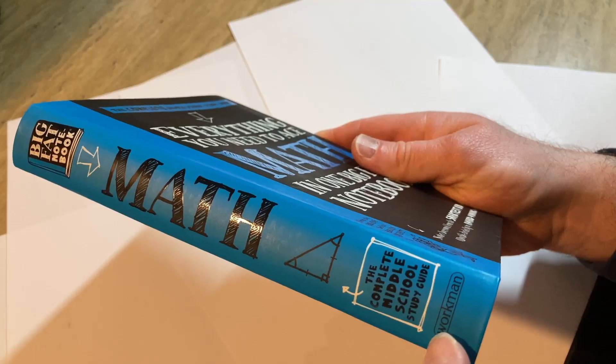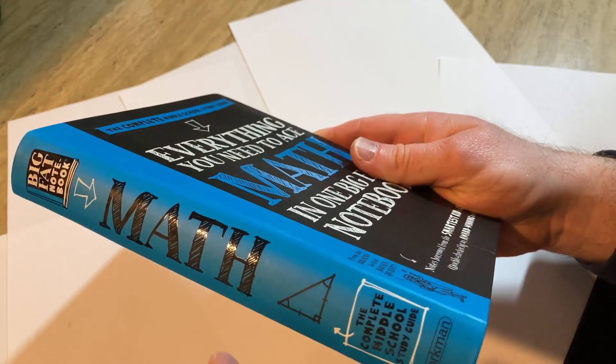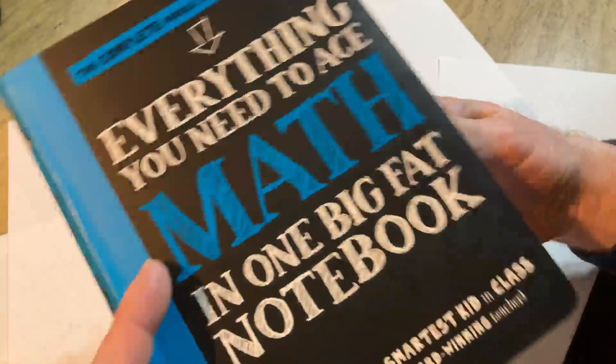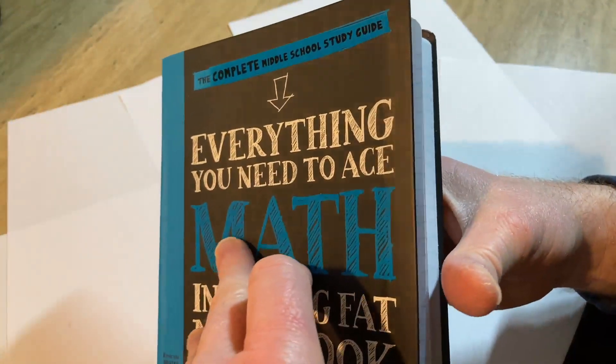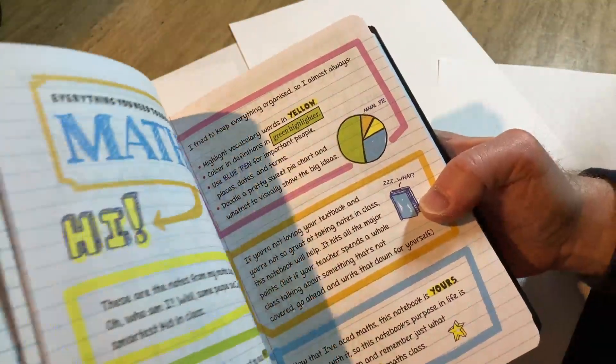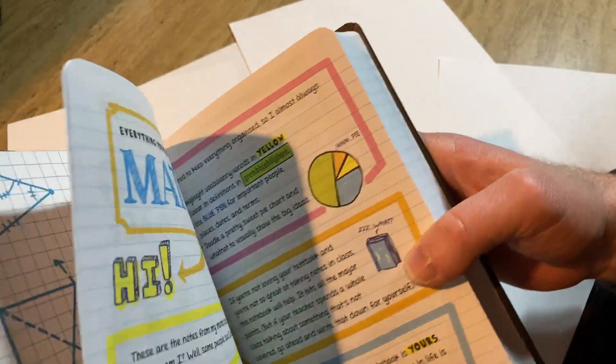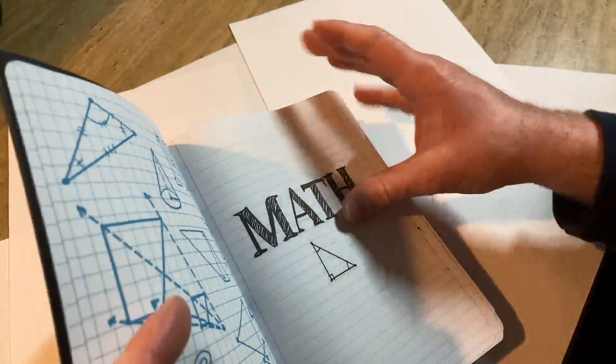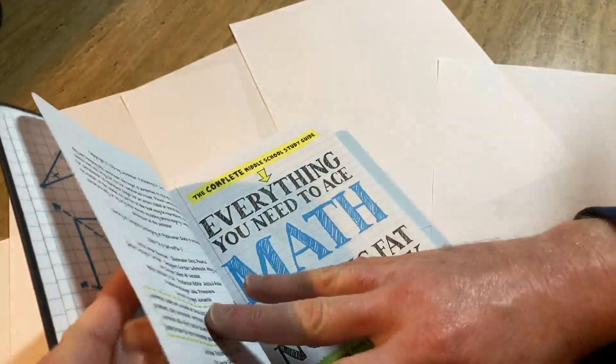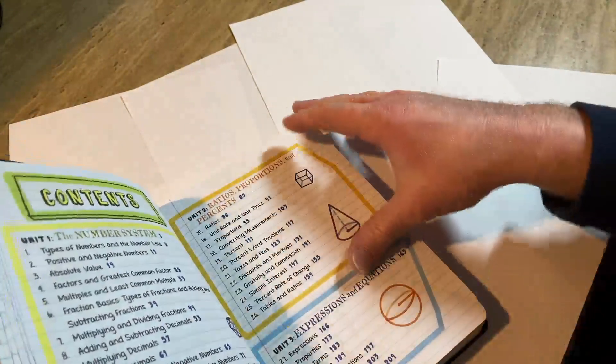It's published by Workman Publishing. They publish other books on math and science and other subjects for people who go to school who want to learn those subjects. But you can use this book for self-study. It's really intended for that purpose. Let me show you some of the contents and you'll see that it really starts from the beginning.